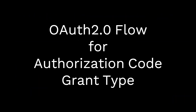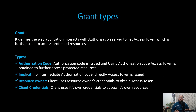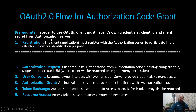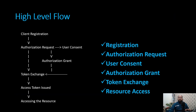Now, OAuth 2.0 flow for authorization code grant. The client must first register against the server so that client ID and client secret are available. It then makes a request, the user consent is given, and the authorization server redirects back to the client with an authorization code — not an access token. We then exchange the authorization code by hitting the token endpoint to get the access token, and a refresh token may also be returned. With the access token, we can access the protected resources.